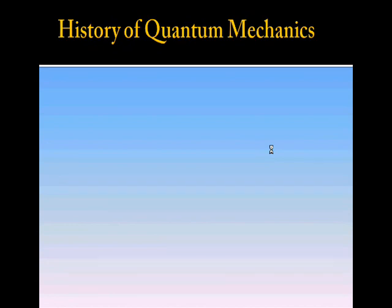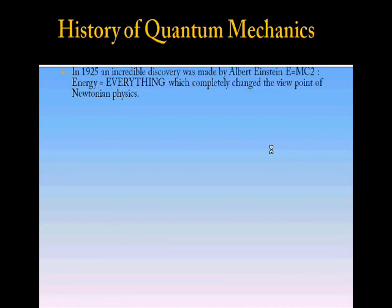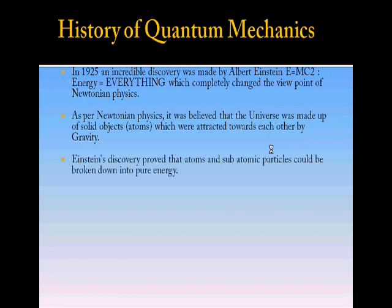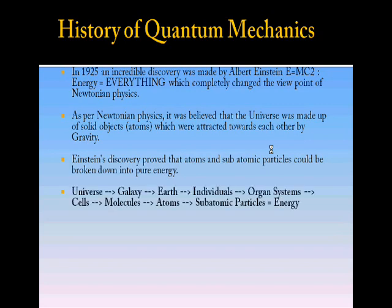Now let us peek into the history of quantum mechanics. In 1925, an incredible discovery was made by Albert Einstein. He gave the famous equation E=mc², which means energy equals everything, which completely changed the viewpoint of Newtonian physics. As per Newtonian physics, it was believed that the universe was made up of solid objects or atoms which were attracted towards each other by gravity. But Einstein's discovery proved that atoms and subatomic particles could be broken down into pure energy.